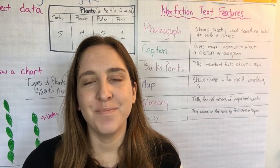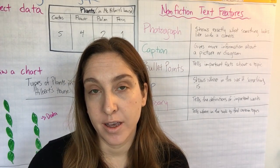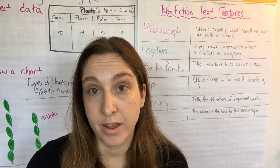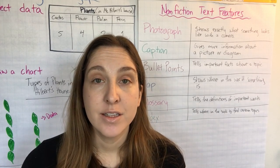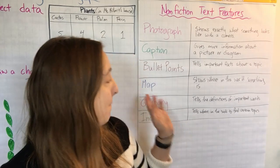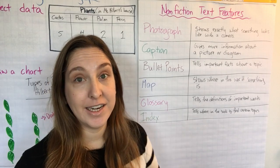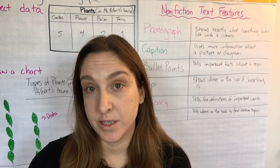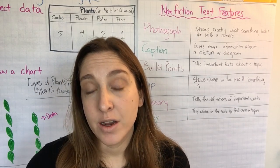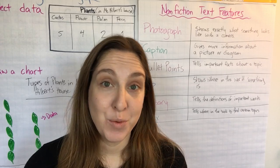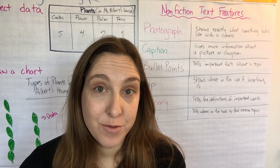Good morning, third graders. Today we're going to continue talking about a couple other new kinds of text features. So on my chart here, I made map, glossary, and index. Those are the three that we're specifically going to look at. But while we're doing that, we can still learn some more information about wolves in real life.